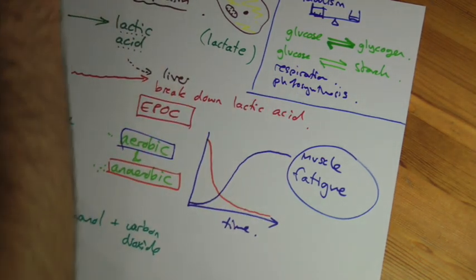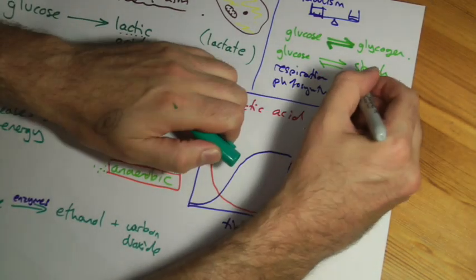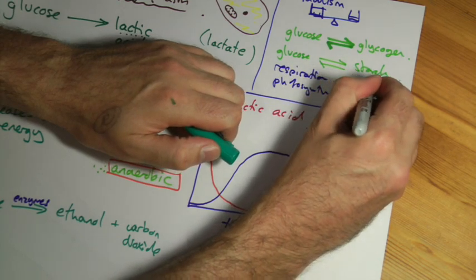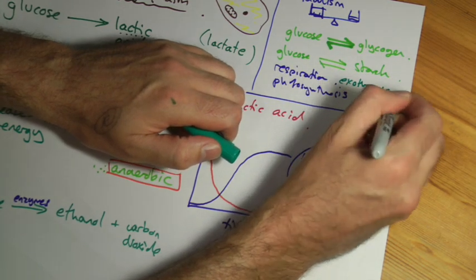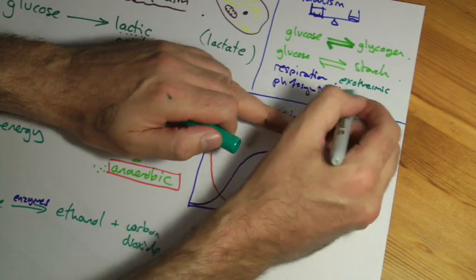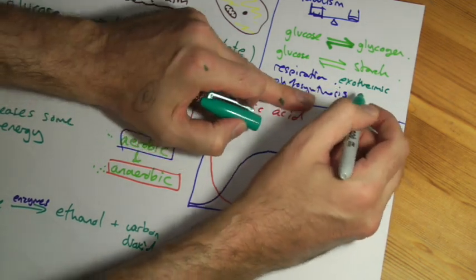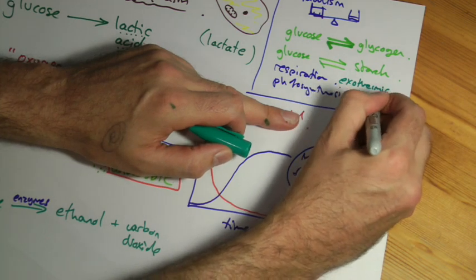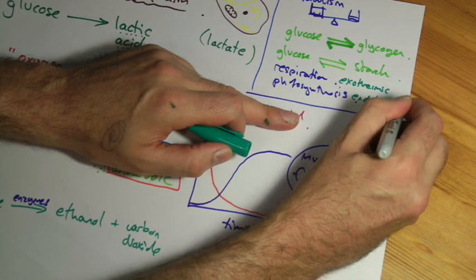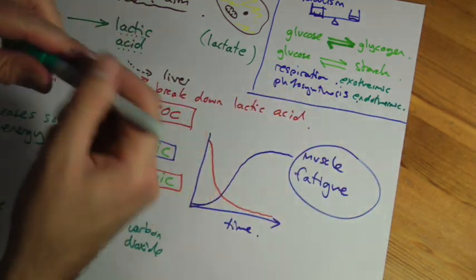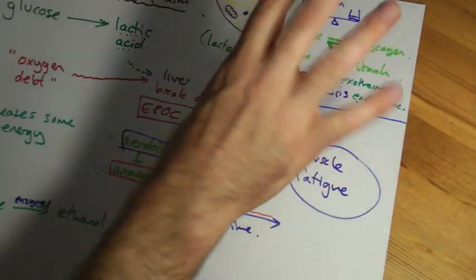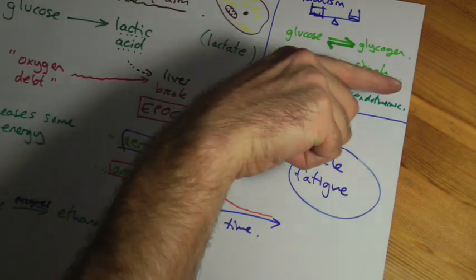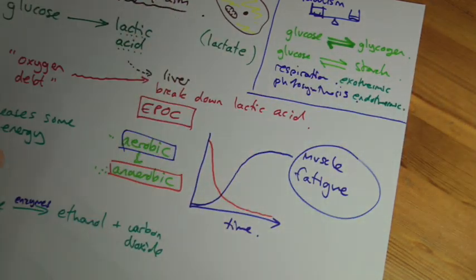Actually, interestingly, respiration is an exothermic reaction, meaning it releases heat energy. And because photosynthesis is kind of the opposite way around, photosynthesis is an endothermic reaction. If we look at photosynthesis, the formula for photosynthesis and aerobic respiration is kind of the same thing flipped around. So if it goes one way and releases energy, if it goes either way, it takes in more energy from its surroundings.